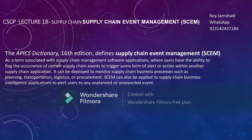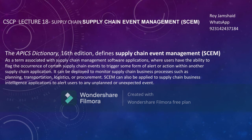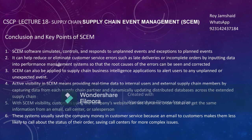Let's go to the definition from APICS. You don't need to memorize all the applications — you just need to focus on the concept. Supply Chain Event Management is a computer software application that is integrated with other applications like ERP, TMS, and WMS through an integrated system. You need to understand the basic concept.